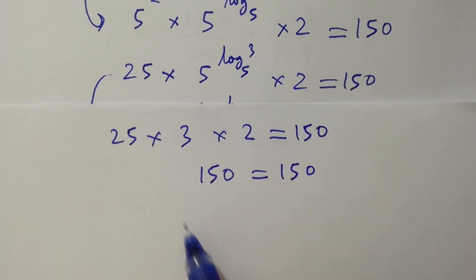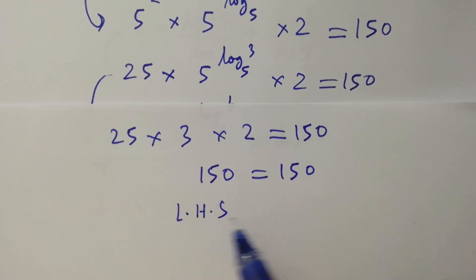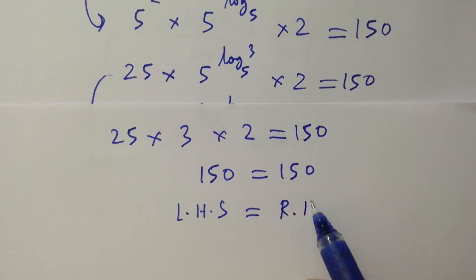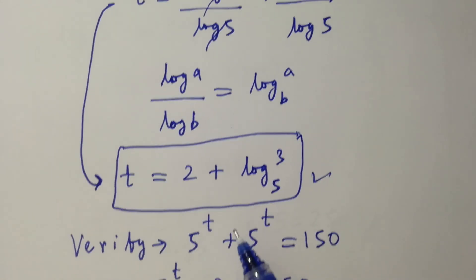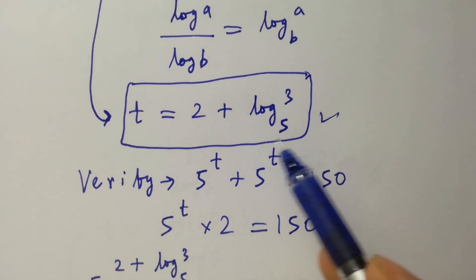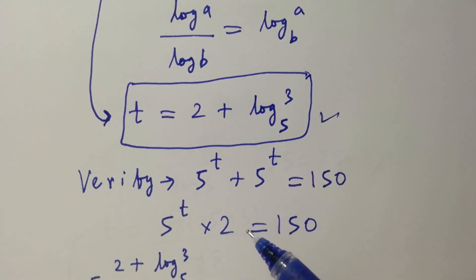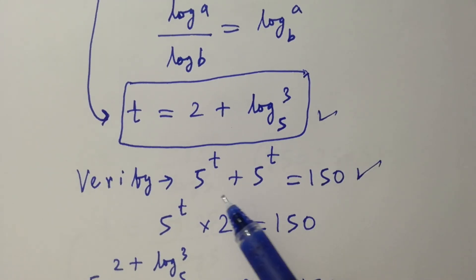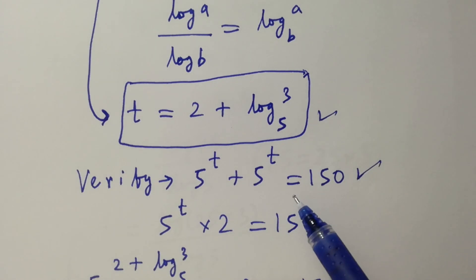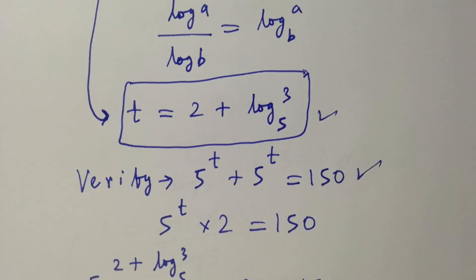Left hand side equals right hand side, which shows that the value of t equals 2 plus log 3 to the base 5 satisfies the equation 5 to the power t plus 5 to the power t equals 150. Thanks for watching this video. Please subscribe to the channel to get notifications of my new videos.